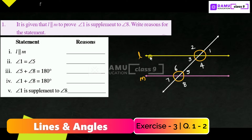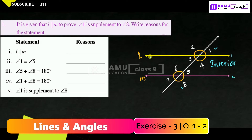Here, angle 1 and angle 8 are exterior angles — they are on the outside of the two lines. The interior angles are the ones on the inside of the two parallel lines.